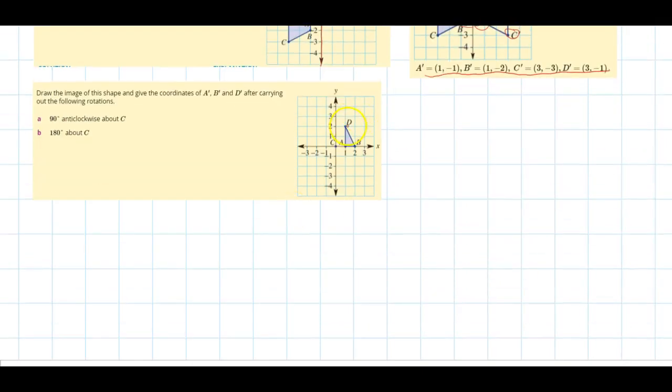Draw the image of this shape here and give the coordinates A, B and D. We're going to do that along this C. You can see here in the middle we've got C the centre point there which we're going to rotate around. For A let's do that going anti-clockwise about C. Let's do that now quickly.